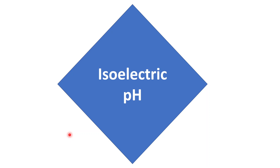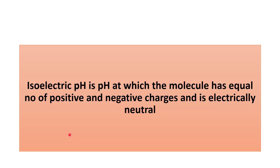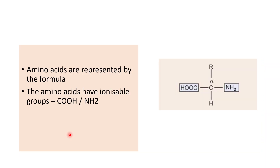Let us understand what is isoelectric pH. The definition of isoelectric pH is: it is a pH at which the molecule has equal number of positive and equal number of negative charges, so it becomes electrically neutral and has no net charge. Now if you look at this formula of amino acid...